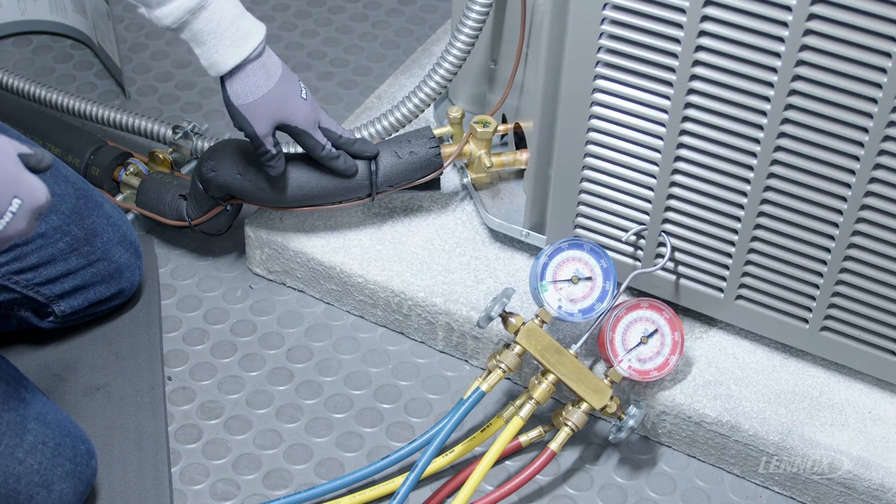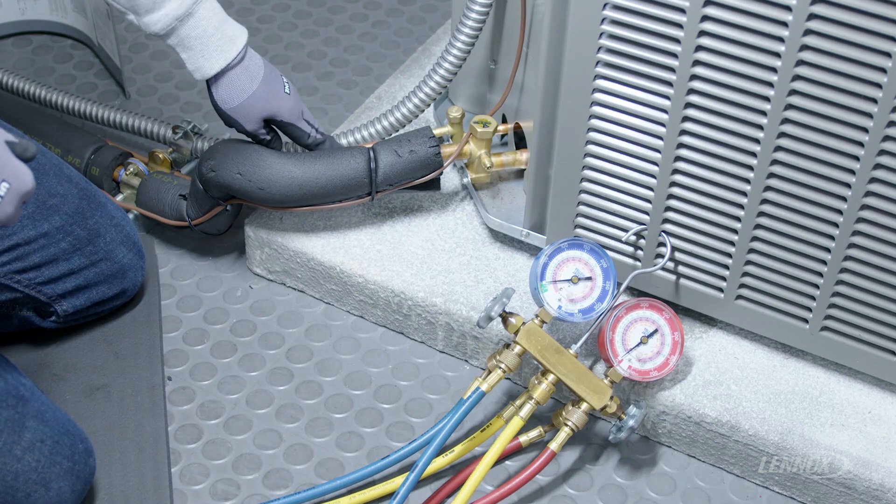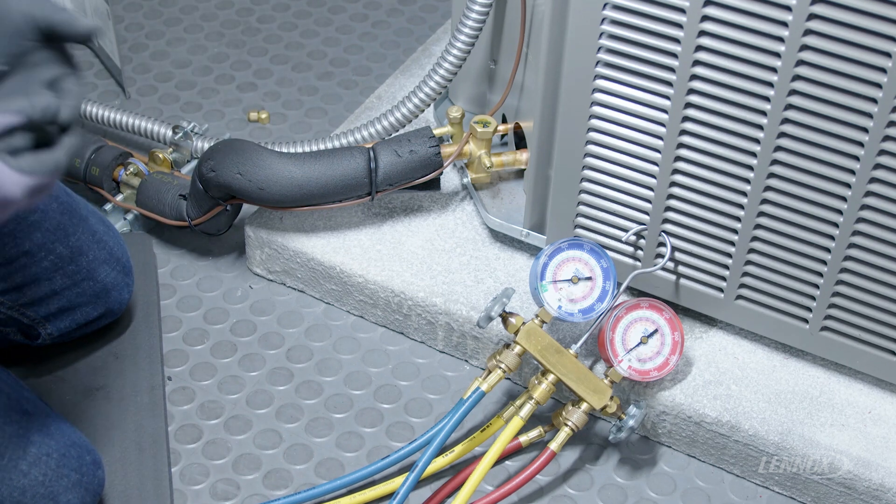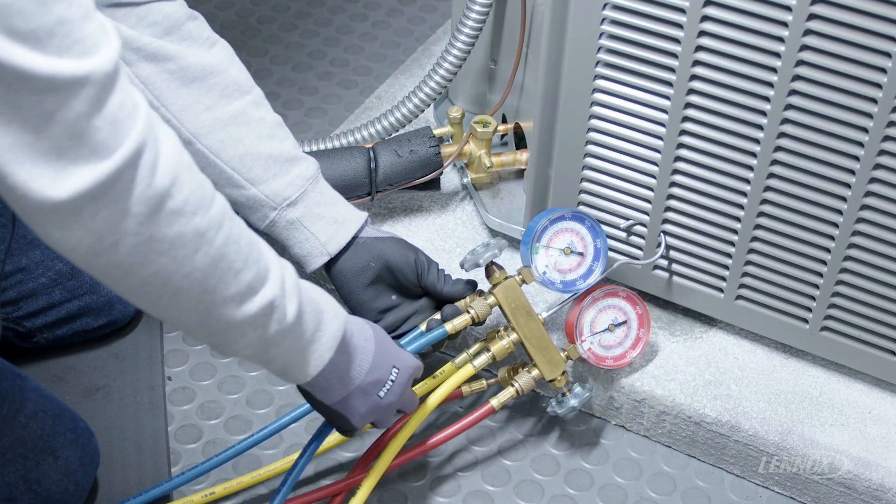Respectively, our suction line is cold and typically in an air conditioner, our liquid line is warm. So in terms of which gauge to hook up, think blue for low side and red for high side.